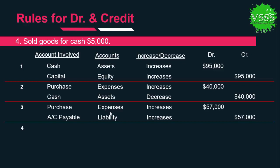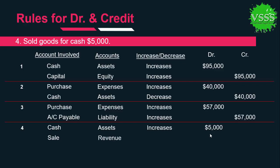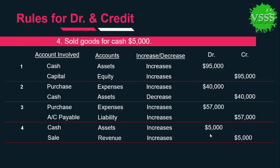In transaction four, he sold goods for cash, meaning cash is coming in and goods are going out. Two accounts are affected: cash and sales. Cash is an asset; it increases, so we put $5,000 on the debit side. When goods go out, our sales increase — sales represent revenue, and when revenue is generated it belongs to the credit side, so we put $5,000 on the credit side.